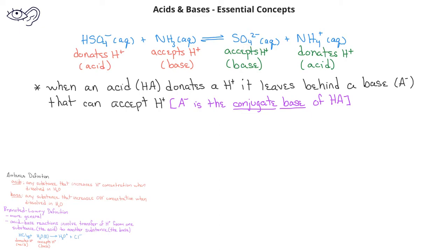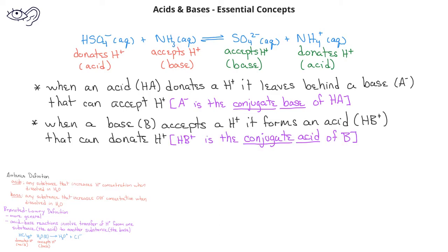On the other hand, when a base such as NH3 accepts a hydrogen ion, it forms an acid. In this case, that acid is NH4+. That NH4+ that is formed can act as an acid by donating the hydrogen ion. We would say that the acid formed is the conjugate acid of the base ammonia. On the other hand, the sulfate as a base is the conjugate base of the acid HSO4-.